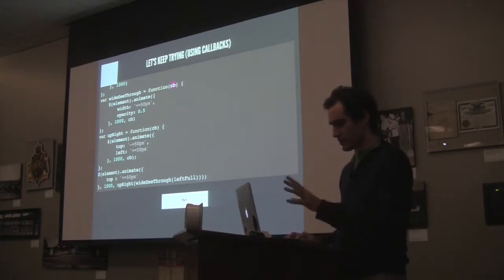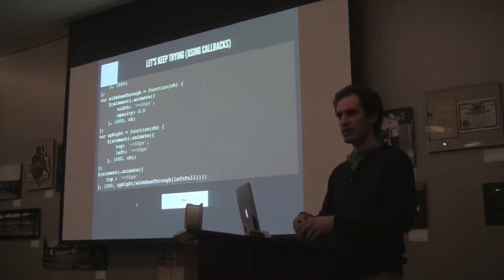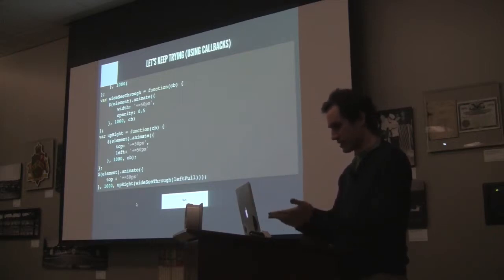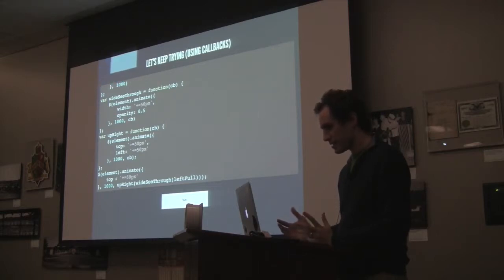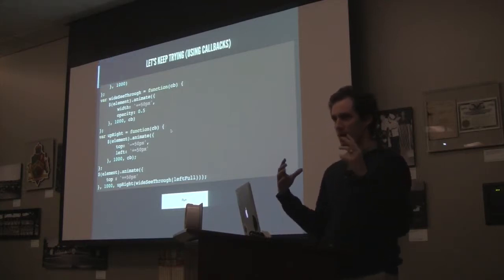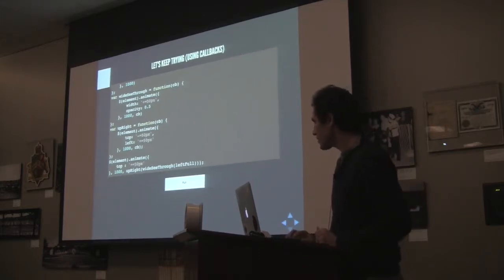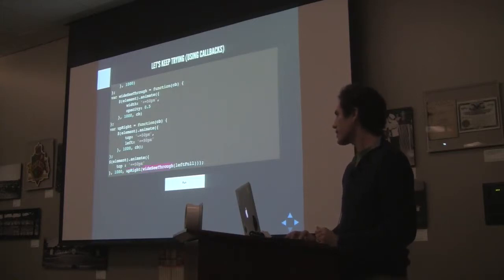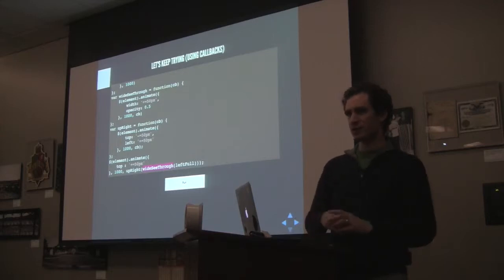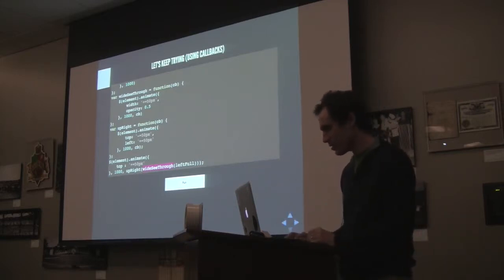At the end we call element.animate — our first step, move it down — then call 'upright' followed by 'wide C3' followed by 'left full'. That should give us the animation working perfectly and it's readable. But when we run it, it does the wrong animation — it went wide and translucent first. What's happening is I'm calling 'upright' and actually invoking it right away instead of passing it as a callback chain. The way the expressions evaluate, 'wide C3' gets called first, which is why you saw that animation. So that's no good — this is called callback hell.